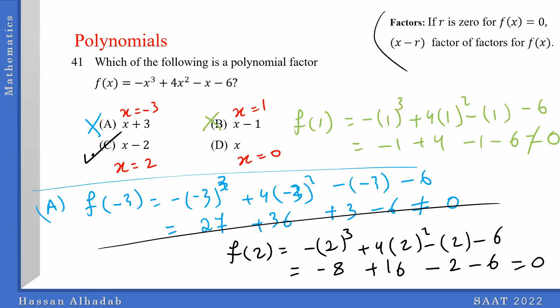So the idea in short: if you want to find if a point is a factor for the polynomial, just plug in the point. If you get 0, then it's a factor; if not, then it's not a factor.